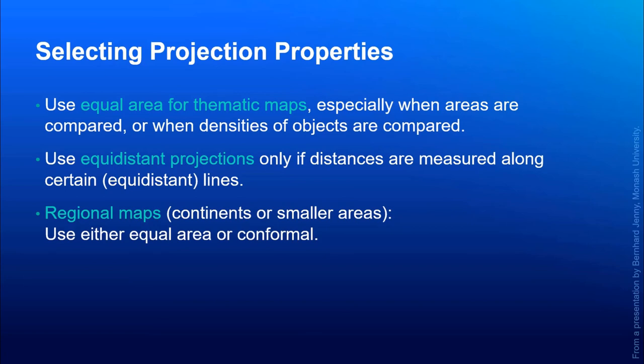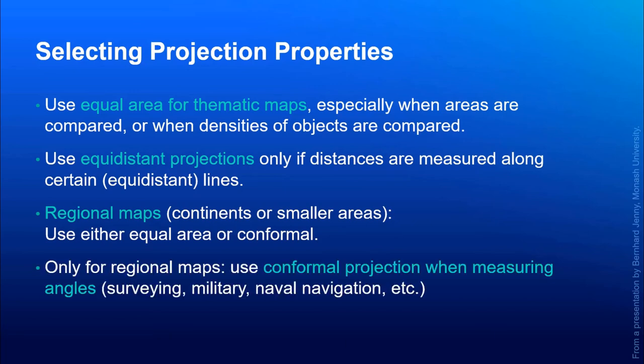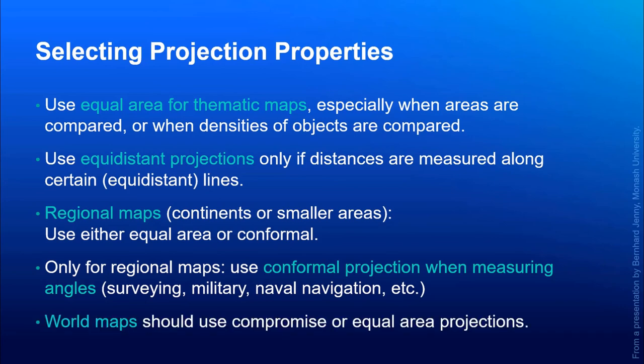Regional maps, such as continents or small areas, again, you could use either equal area or conformal. And for conformal projections, that's when you would want to use, when you're trying to measure angles, like for surveying, you want right angles to remain right angles, you were in the military, or you're using it for navigation, that's when you would want to use, possibly, a conformal projection. And then again, as we talked about earlier, world maps should use either a compromise or an equal area projection.